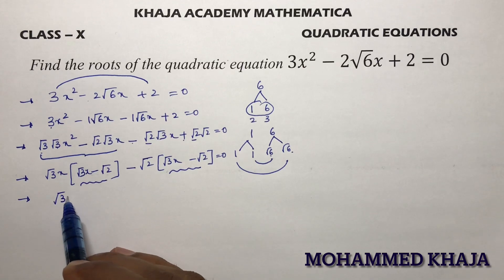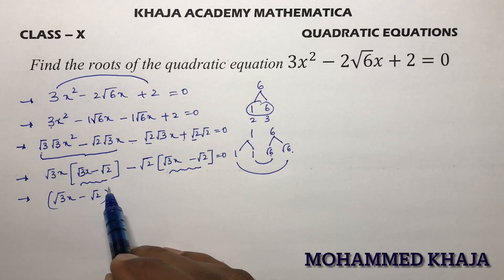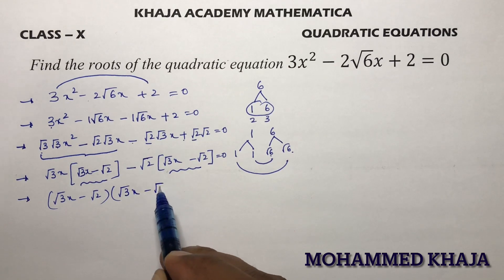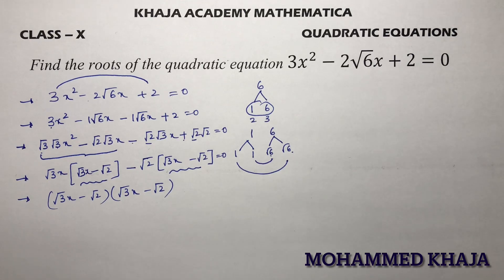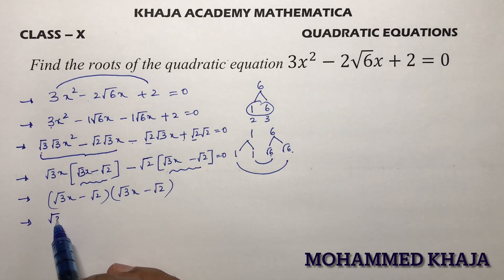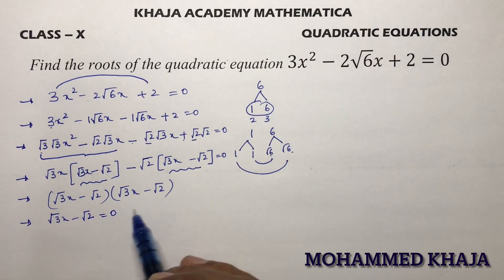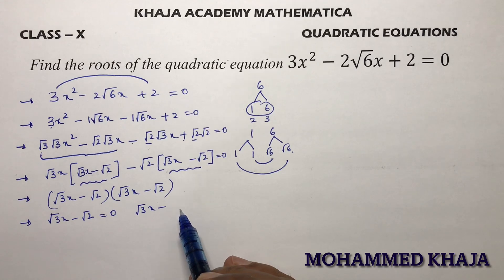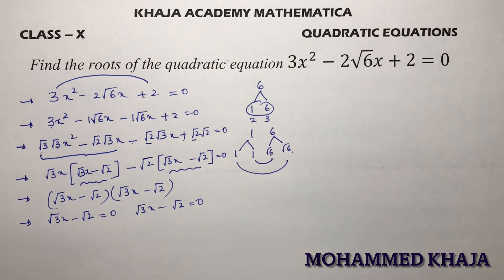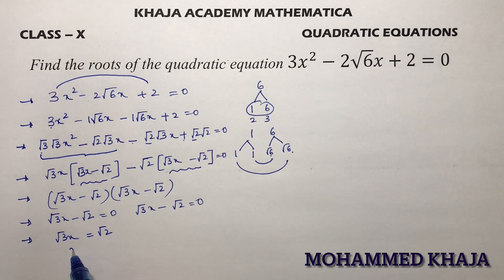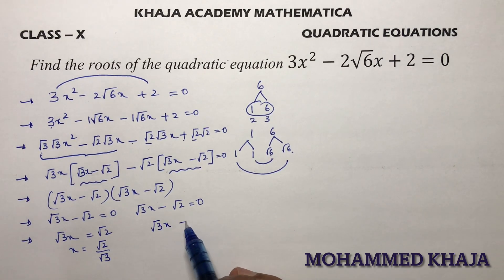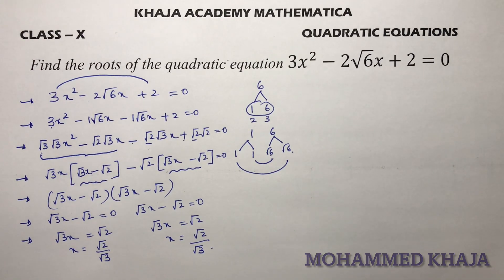Taking (√3x - √2) common gives (√3x - √2)(√3x - √2) = 0. So √3x - √2 = 0, which gives √3x = √2, therefore x = √2/√3. Both roots are equal: x = √2/√3.